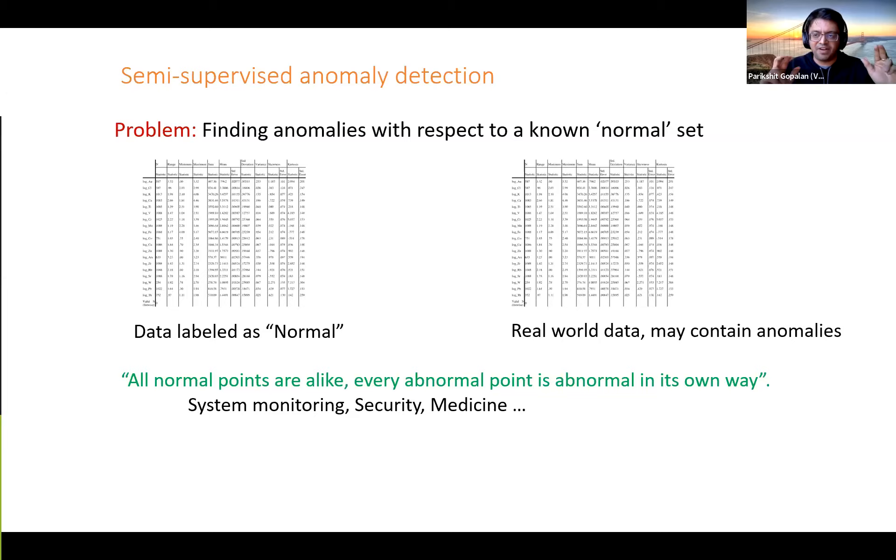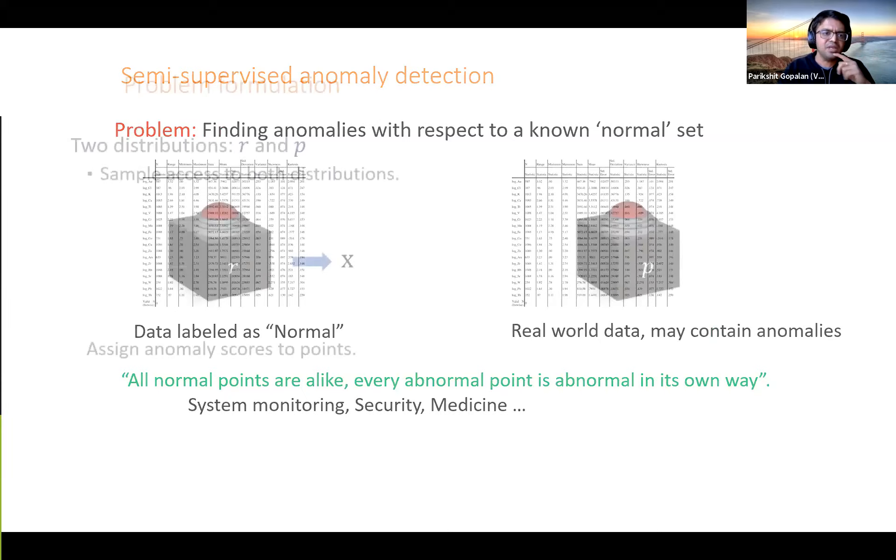A pithy way to describe this problem is that all normal points are alike, but every abnormal point is abnormal in its own way. This situation comes up in network security, system monitoring, healthcare, and so on, where it's fine to assume that you have a broad representative sample of what's normal. It's not so okay to assume that you have good labeled examples of what abnormal behavior looks like.